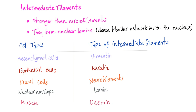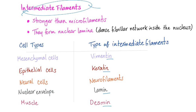Third, intermediate filaments. They are stronger and thicker than microfilaments and form nuclear lamina. Depending on the type of tissue, different intermediate filaments are found: in mesenchymal cells, vimentin; in epithelial cells, keratin; in neural cells, neurofilaments; in the nuclear envelope, nuclear lamina or lamin; in muscle cells, desmin. All of these names end in '-in,' reflecting that they are proteins — because intermediate filaments are part of the cytoskeleton, which is made of proteins.